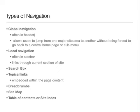Hierarchy can be represented by using different types of navigation. Types of navigation include global navigation, local navigation, search boxes, topical links, breadcrumbs, site maps, and site indexes.